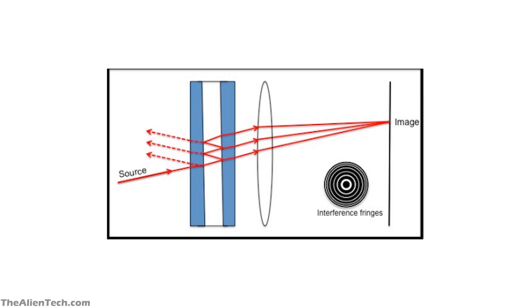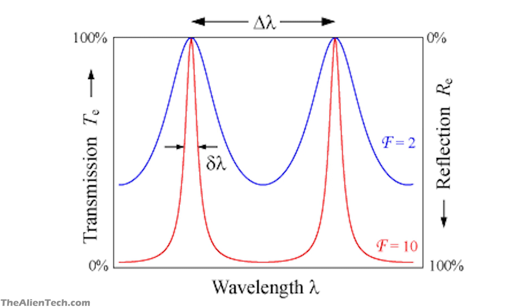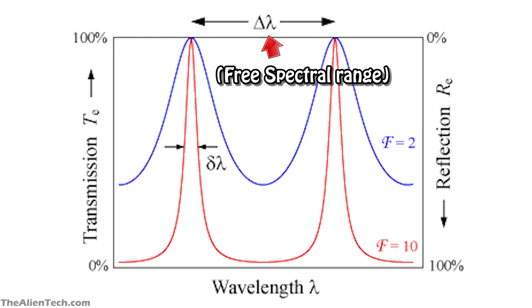The third parameter is the etalon FWHM — full width half maximum. It is the width of the transmission profile at one-half of the filter's maximum transmission, or the width of a spectrum curve measured between those points on the y-axis which are half the maximum amplitude. It is calculated in angstroms. The fourth parameter is the etalon FSR, or free spectral range — it is the distance between the two successive reflected or transmitted peaks of wavelengths by the etalon, and is also measured in angstroms.